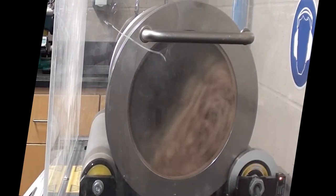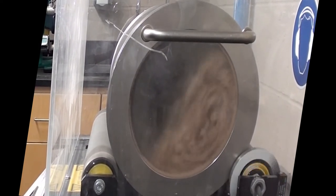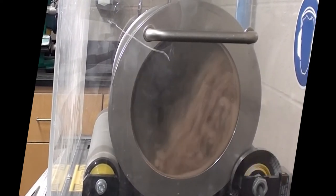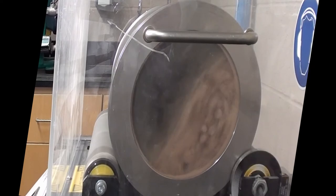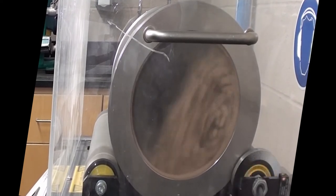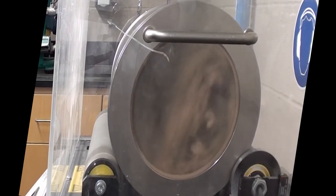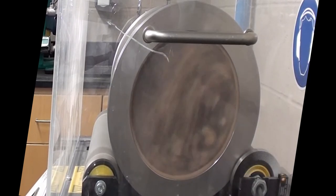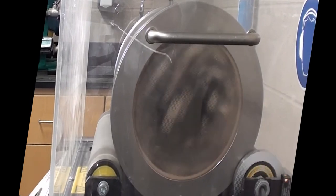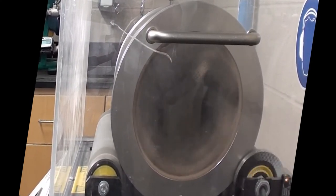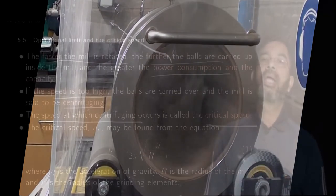If the speed is too high, the balls will be carried over, and if it goes beyond a certain limit, the balls will not fall but rather will centrifuge along with the mill itself. The speed at which this centrifuging occurs, the speed at which the balls really centrifuge and do not fall, is called critical speed. If you operate at or beyond the critical speed, there will be minimum size reduction taking place.